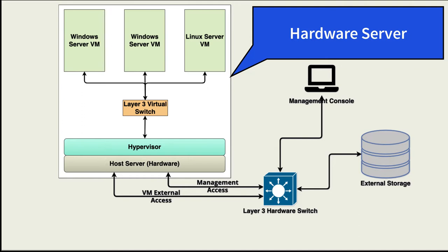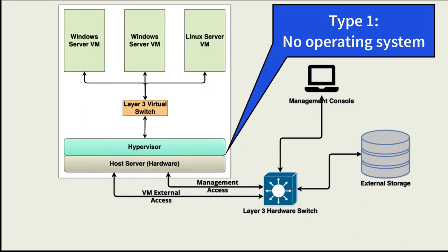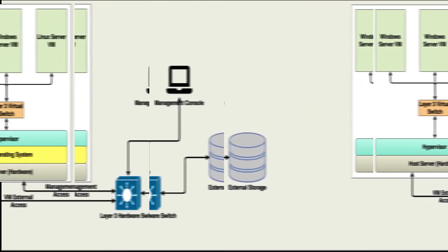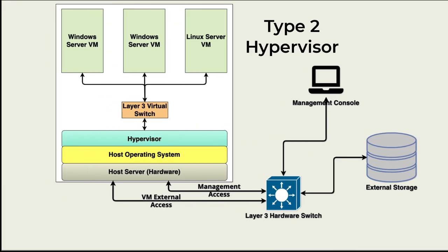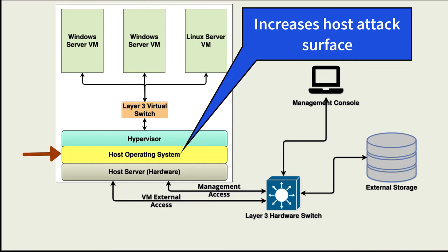There are two types of hypervisors: Type 1 and Type 2. A Type 1 hypervisor runs directly on the server with no underlying operating system. A Type 2 hypervisor runs as an application dependent upon an operating system — an OS that provides an interface between the hardware host and the hypervisor. The introduction of an OS increases the attack surface of the host system.